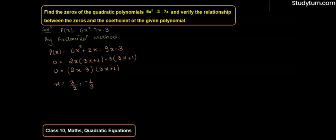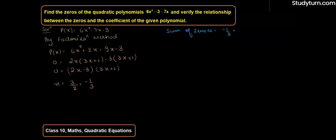Now we have to find the relation between the zeros and the coefficients. So इसके लिए we find the sum of zeros. Sum of zeros हो जाएगा: (-1/3) + (3/2). The common denominator is 6: (-2 + 9)/6, which is equal to 7/6. So sum of zeros = 7/6.